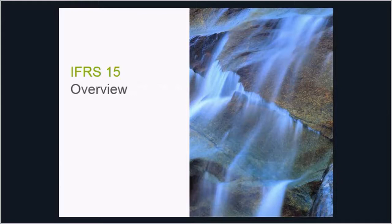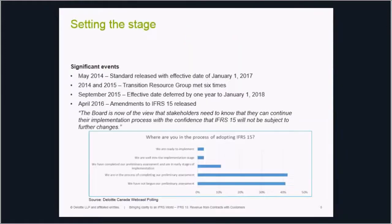Before getting into the amendments to IFRS 15, here's a brief recap of significant events. Just over two years ago in May 2014, the IASB issued IFRS 15, the result of a joint project with the FASB. Concurrent with IFRS 15, the FASB issued Topic 606, the US GAAP equivalent. The Board's objective was to address inconsistencies and weaknesses in existing revenue standards by providing a comprehensive and robust revenue recognition framework.